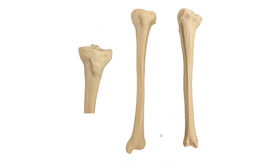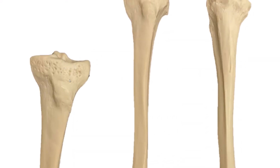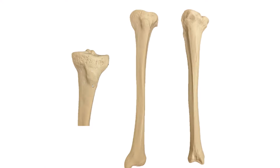Now we're looking at the tibia. I would like to know what is this point and this bump. So this is the tibial tuberosity. This is the intercondylar eminence.